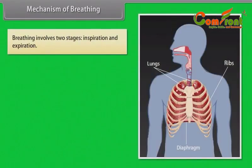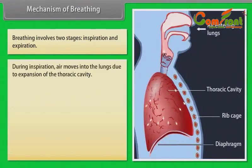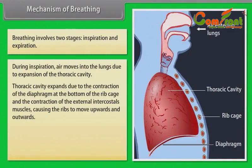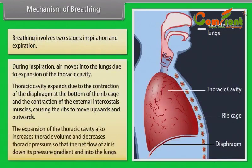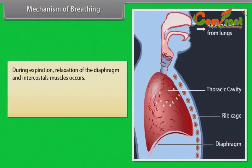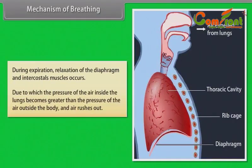Mechanism of breathing: Breathing involves two stages — inspiration and expiration. During inspiration, air moves into the lungs due to expansion of the thoracic cavity. The thoracic cavity expands due to the contraction of the diaphragm at the bottom of the rib cage and the contraction of the external intercostal muscles, causing the ribs to move upwards and outwards. This also increases thoracic volume and decreases thoracic pressure, so that the net flow of air is down its pressure gradient and into the lungs. During expiration, relaxation of the diaphragm and intercostal muscles occurs, due to which the pressure of the air inside the lungs becomes greater than the pressure outside the body, and air rushes out.